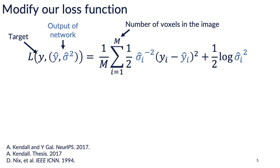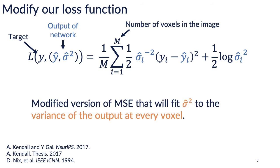To train this modified network, we'll need to modify the loss function slightly. Normally in image translation you'd use MSE, but in our case we use a modified version of MSE that handles the two images output by our model. This has a probabilistic derivation — see the references for more. The upshot is that it fits the variance of the output at every voxel. Unlike vanilla MSE where we only estimate the mean, here we also estimate the variance. Importantly, we don't need a ground truth variance image; this loss function fits the mean and variance from the target image alone during training.